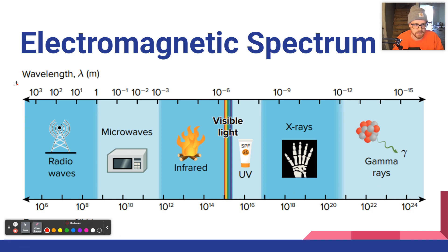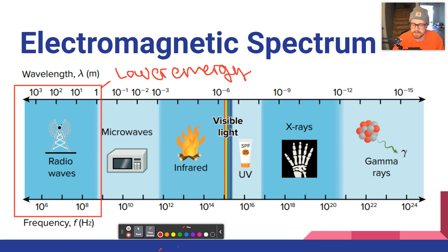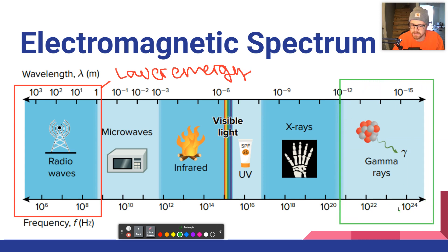Looking at the spectrum chart: we have frequency along the bottom. On one side is lower or lowest energy, and on the other side is highest energy. So it's a spectrum ranging from radio waves on the low-energy end all the way to gamma rays on the high-energy end.